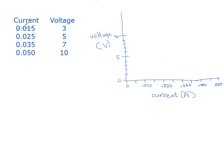And if we plot our data, we've got 0.015 goes with 3 volts, so that current goes with 3. 0.025, which is between 20 and 30, goes with 5 volts, right about there. 0.035 goes with 7 volts, this is looking fairly straight liney, that's encouraging, and 0.050 goes with 10 volts.